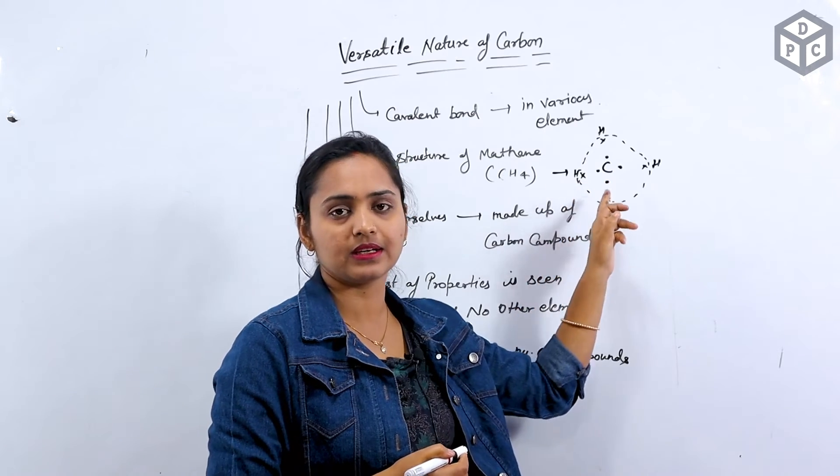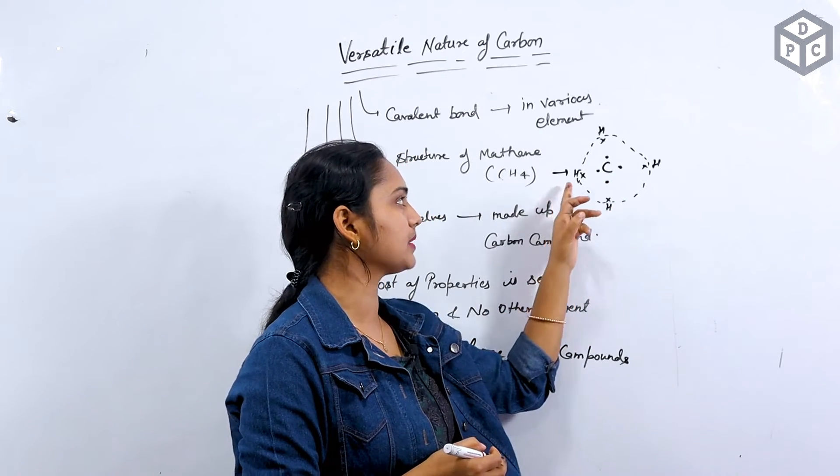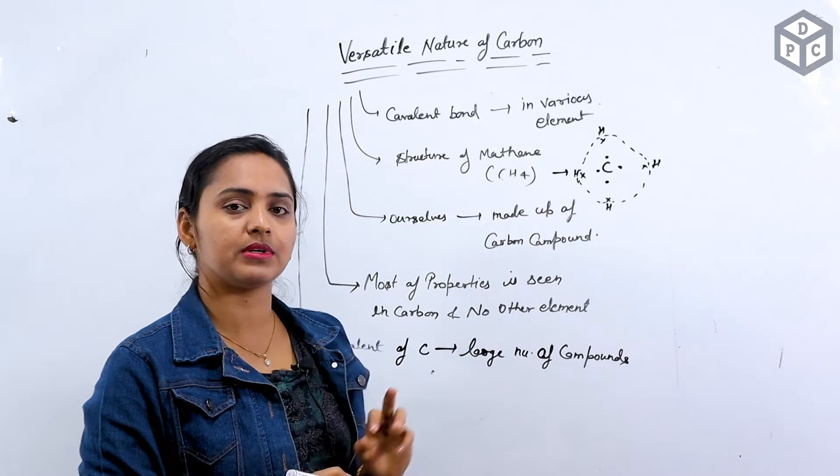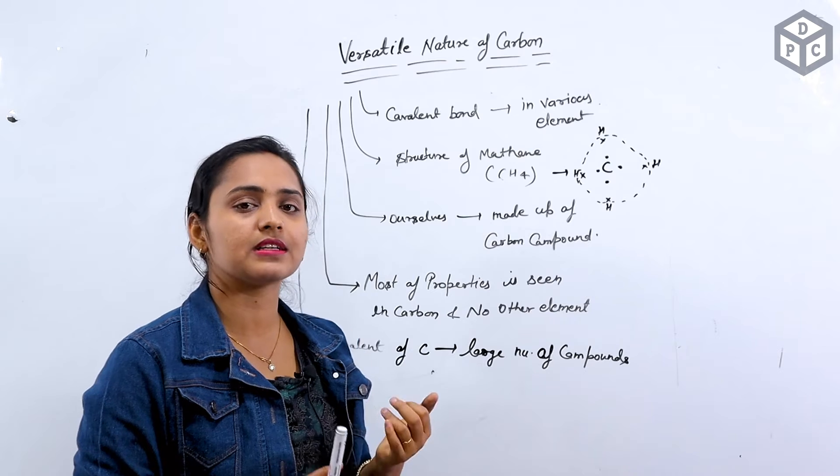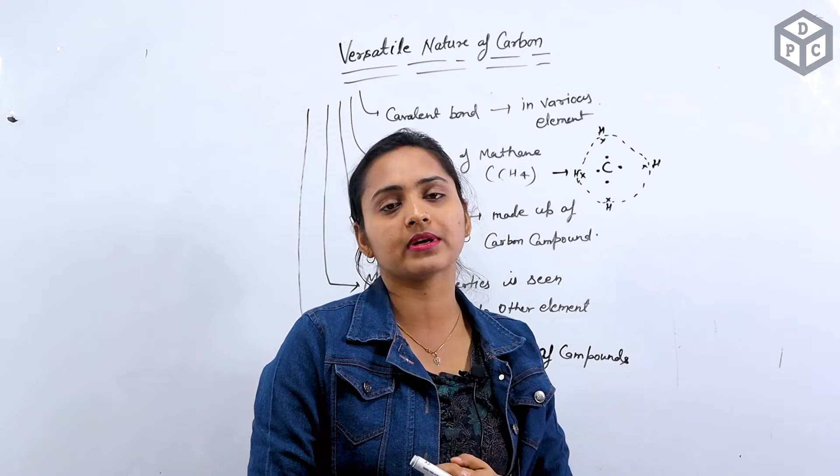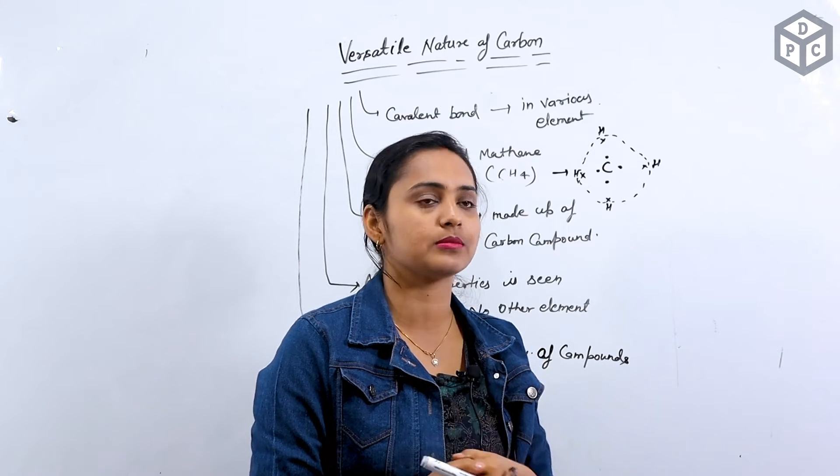We have also seen this covalent bond with methane. You will tell us that the covalent bond is one structure. We have understood methane, ethane, propane, etc. Now step by step you will reach the nomenclature. Then you will know about everything in the future.